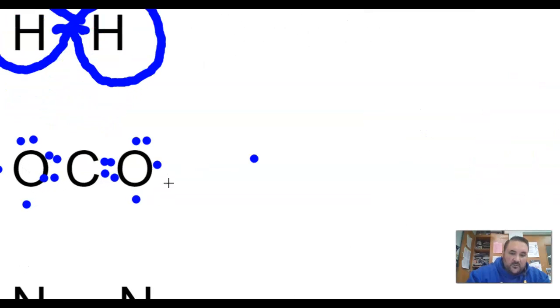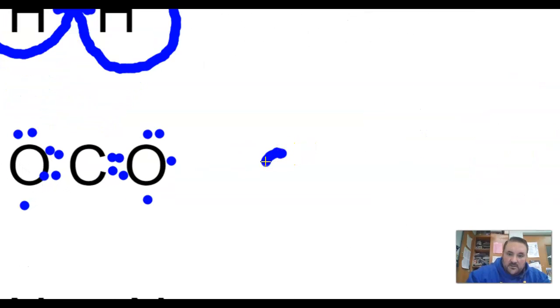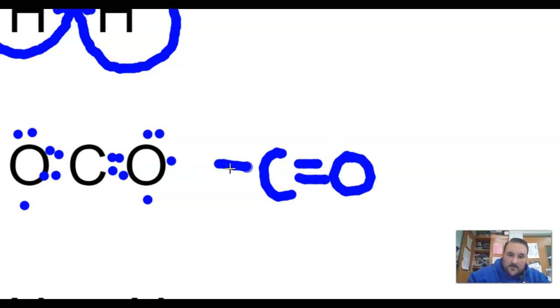You end up with what we call a double bond. And each line here represents a shared pair of electrons.